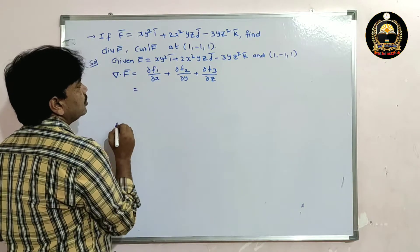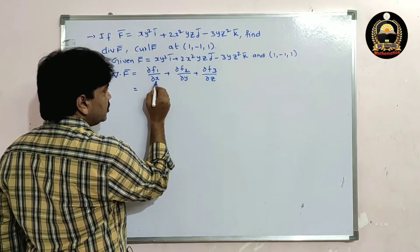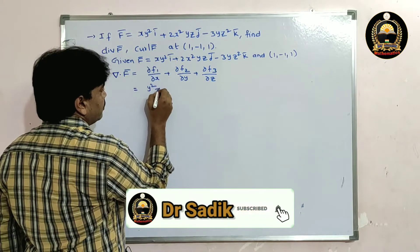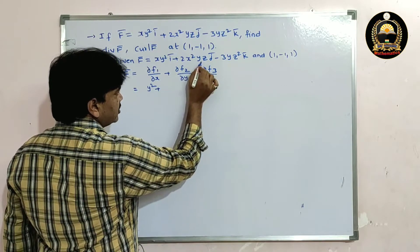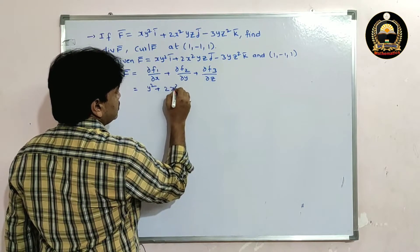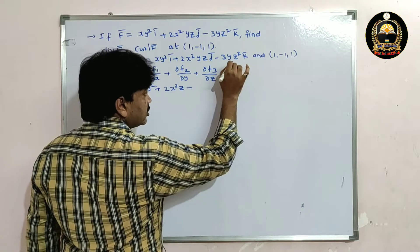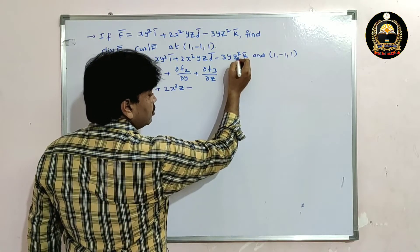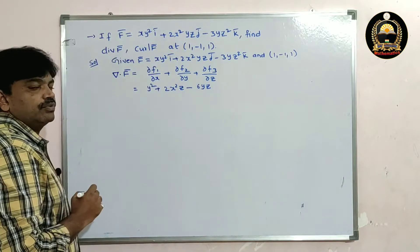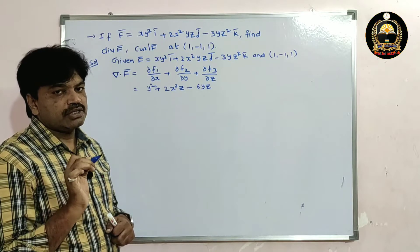Here f1 = xy², so differentiating partially with respect to x, the derivative of x is 1, so we get y². Plus f2 = 2x²yz, differentiating with respect to y, the derivative of y is 1, so we get 2x²z. Minus f3 = 3yz², differentiating with respect to z, the derivative of z² is 2z, so 2×3 = 6yz.